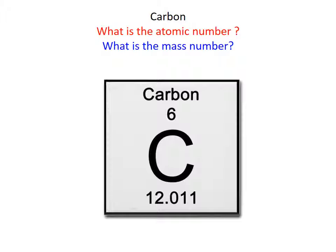Biochemistry is based on the chemistry of carbon. Carbon's atomic number is 6, which means it has 6 protons and 6 electrons. By looking at its mass number, which we round off to 12, we can deduce the number of neutrons by subtracting the atomic number from the mass number: 12 minus 6 equals 6. Therefore, there are 6 neutrons in carbon.